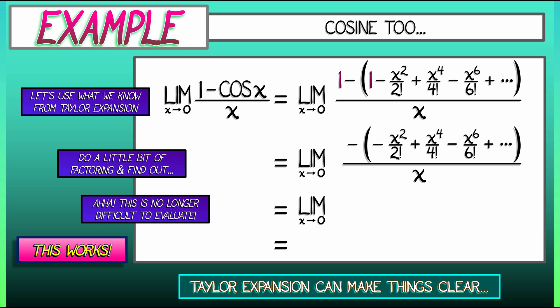Again, we can factor out an x from the numerator because every term has at least some powers of x in it. We can cancel out with the x in the denominator, and we are left with the limit as x goes to zero of x over 2 factorial minus x cubed over 4 factorial, and then a whole bunch of other terms, all of which have higher and higher degrees or powers in x.